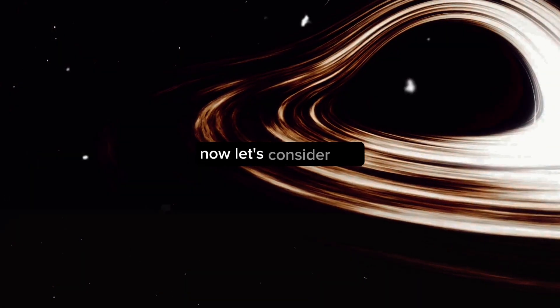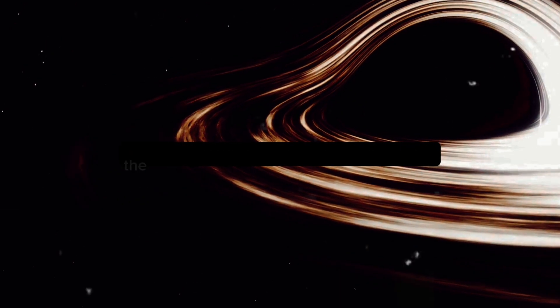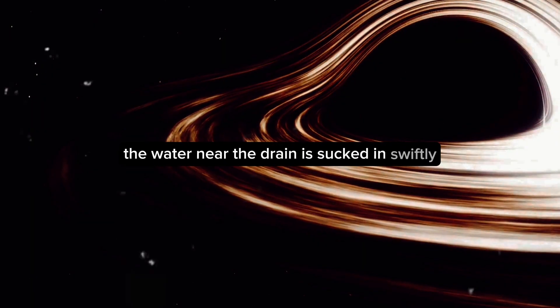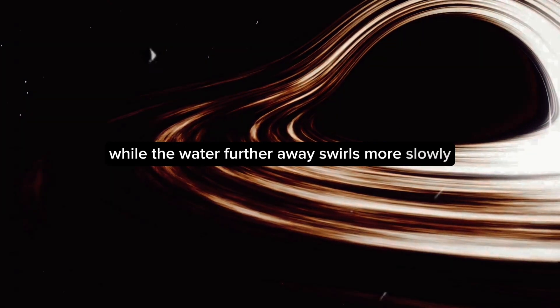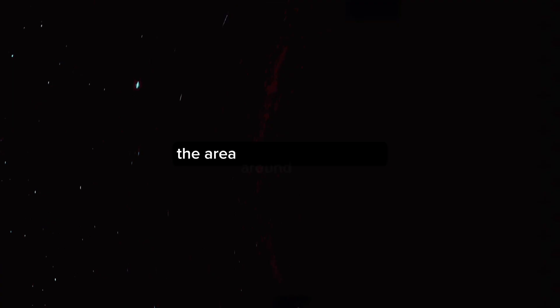Now let's consider this. You're watching water spiral down a bathtub drain. The water near the drain is sucked in swiftly while the water further away swirls more slowly. This is very similar to how a black hole operates. The area around a black hole where nothing, not even light, can escape its gravitational pull is known as the event horizon.